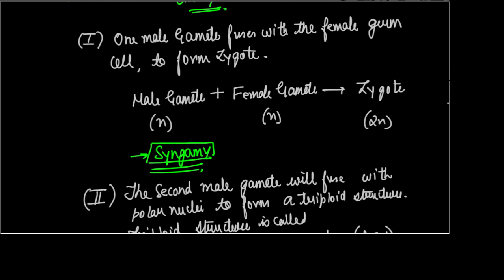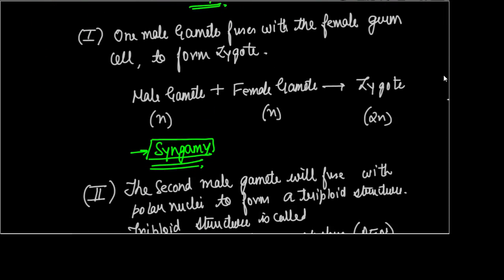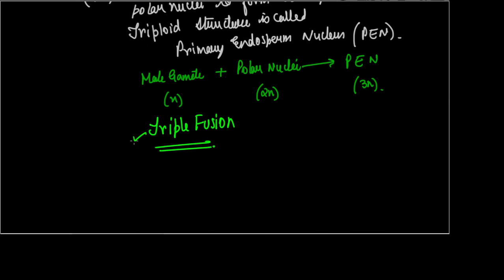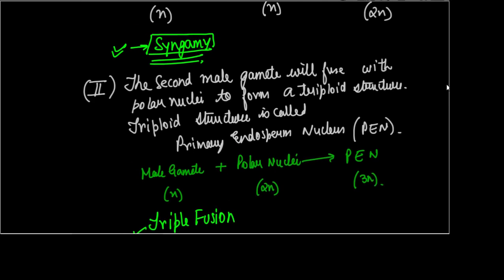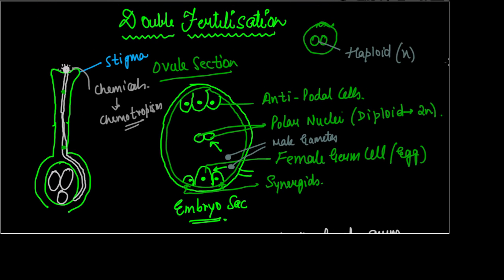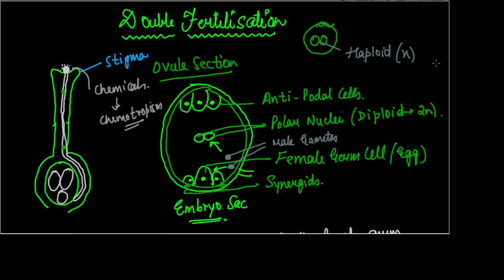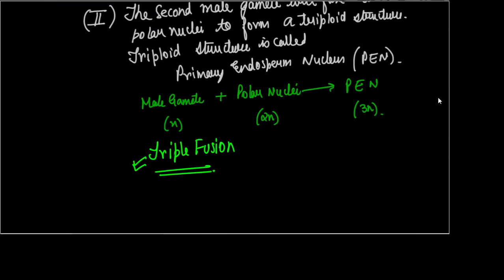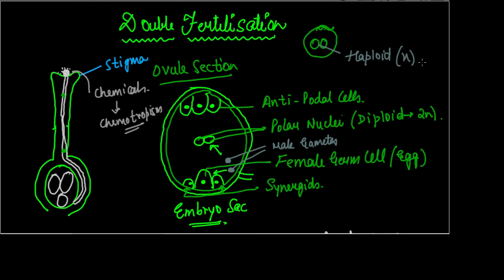So we saw that there are two fusions — two fertilization processes — taking place: syngamy, which is the fusion between the male gamete and the female germ cell, and triple fusion, which is the fusion between the male gamete and the polar nuclei. Since both syngamy and triple fusion take place at the same time, fertilization in angiosperms or flowering plants is called double fertilization.